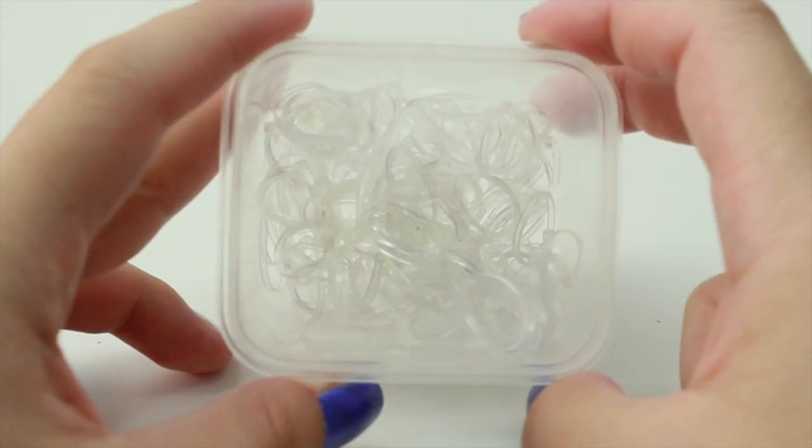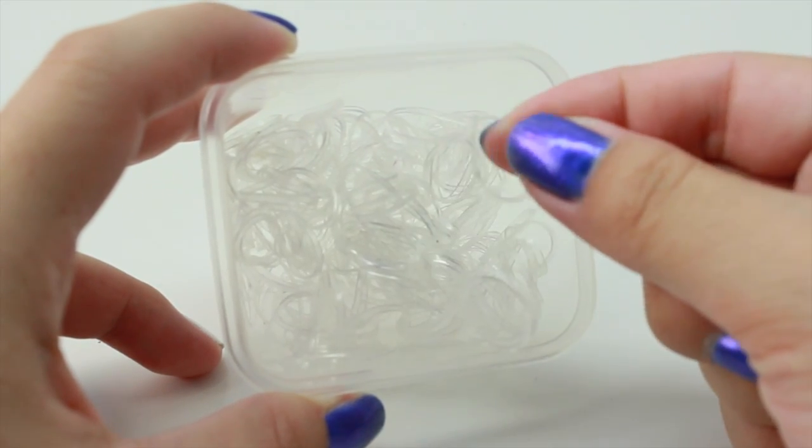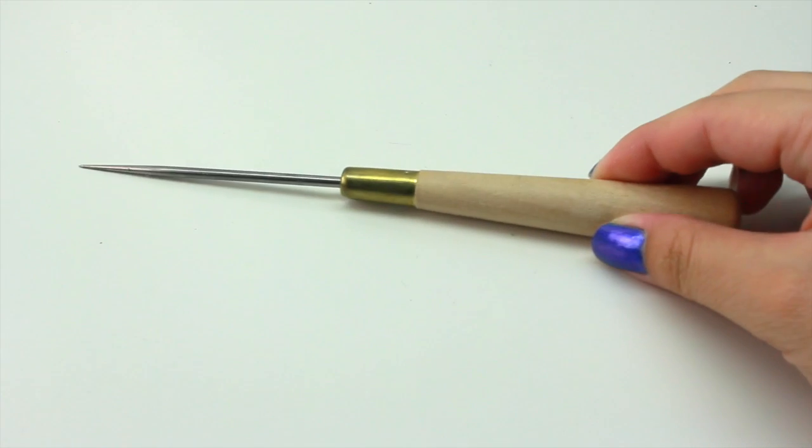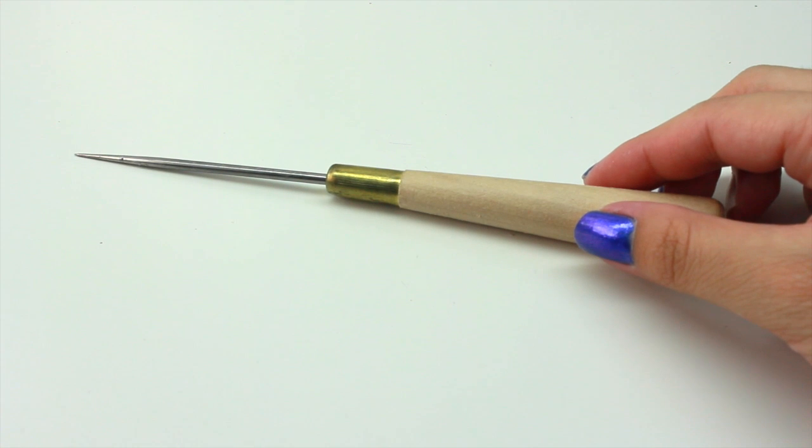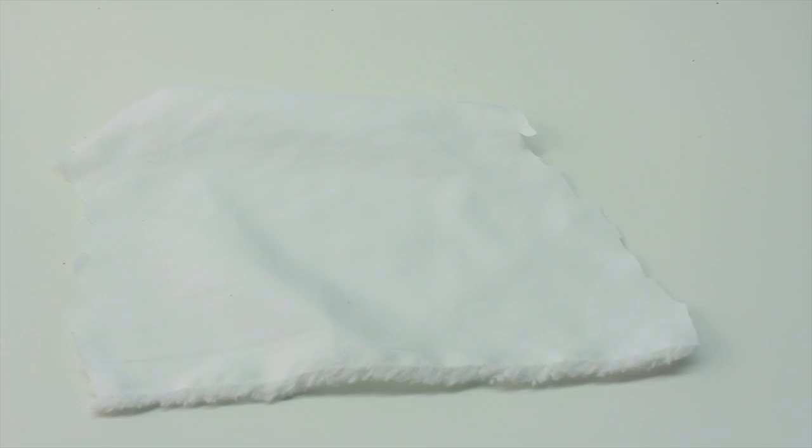You'll need some elastic bands, or you can also use rubber bands if you don't have these. And you'll need something to poke a hole with. Here I'm going to use this, and I know that this is kind of sharp. If you don't have this you can also try using a pencil or a pen. It should be able to make a hole through the fabric as well.